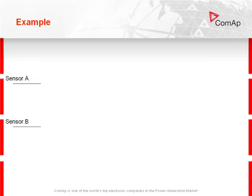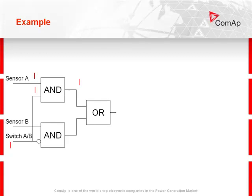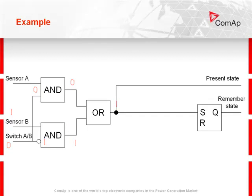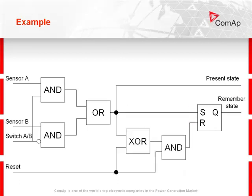We have 2 binary signals from sensor A and sensor B, and a binary switch AB which switches between them. If sensor A is active and switch AB is active, the output will carry the signal from sensor A. If sensor A is non-active, the output will be 0. If we switch AB to 0, the output will carry the signal from sensor B. We then add a flip-flop circuit so that if the signal is active, both the present state and the remembered state will be active. If the signal goes to 0, the flip-flop remembers the previous state. Finally, we add a reset signal and use XOR and AND functions to avoid the undefined state of the flip-flop circuit. The reset signal will only be active in the flip-flop when the set signal is non-active.